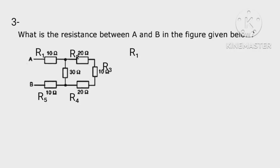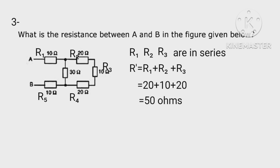R1, R2, and R3 are in series. Therefore, R equals R1 plus R2 plus R3 equals 20 plus 10 plus 20 equals 50 ohm. Now combined resistance.